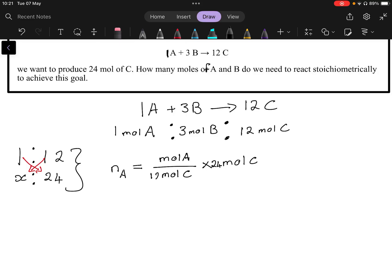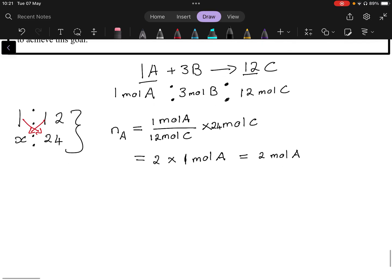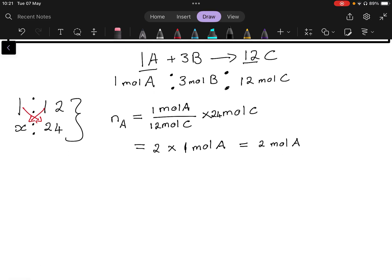So we would say the number of mole of A is equal to the mole of A divided by the mole of C multiplied by the mole of C. So we want 24 mole of C. We have 12 mole of C for every one mole in the reaction so we put the number there at the bottom, we put the number atop, and then we would say well that means it is twice the number of mole of A is what you would have gotten here.